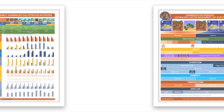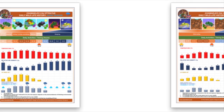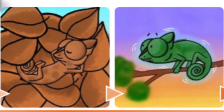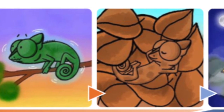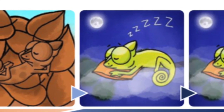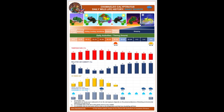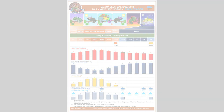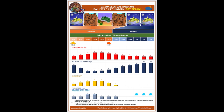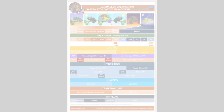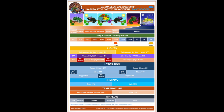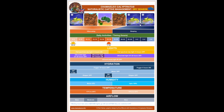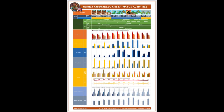These five charts were prepared by Peter Nekas with excellent design by Iva Žilkova and amazing original paintings by Anastasia Žiryaeva — to all of them belong our gratitude. The five sheets are: daily wildlife history, rainy season; daily wildlife history, dry season; naturalistic captive management, rainy season; naturalistic captive management, dry season; and yearly Yemen chameleon activities.